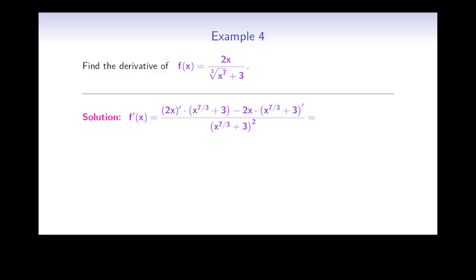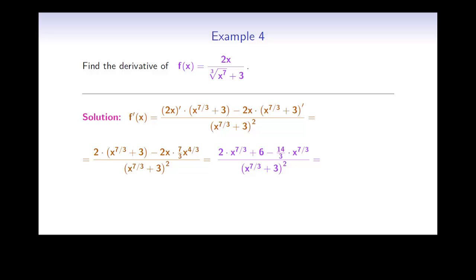The derivative of 2x is 2, and the derivative of x to the 7/3 can be computed using the power rule. When we do that, we get 2 times x to the 7/3 plus 3, minus 2x times 7/3 times x to the 4/3, divided by x to the 7/3 plus 3 squared. Simplifying the numerator gives us 2 times x to the 7/3, plus 6, minus 14/3 times x to the 7/3, all divided by x to the 7/3 plus 3 squared. The first and third terms in the numerator are both multiples of x to the 7/3, so we combine them to get negative 8/3 times the cube root of x to the 7 plus 6, divided by the cube root of x to the 7 plus 3 squared. And that's the derivative of f.